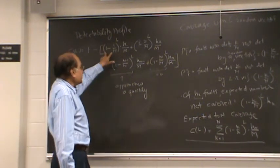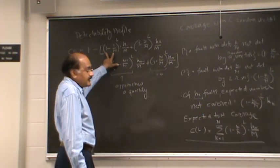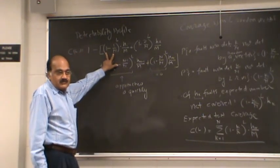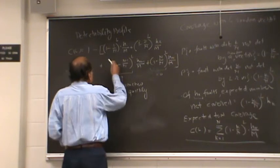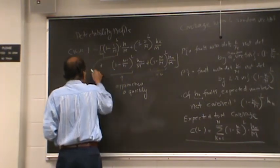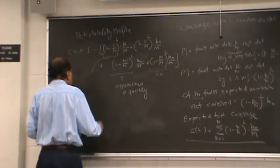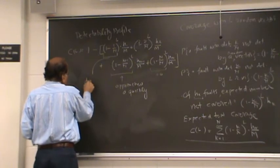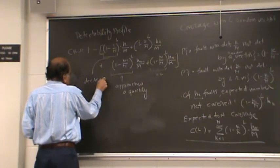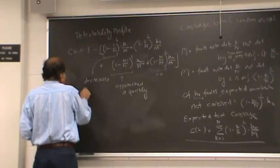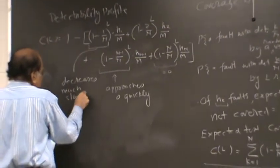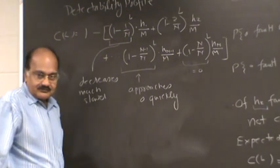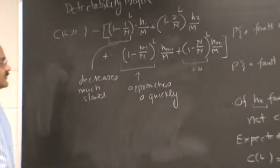Now on the other hand, this term here, it is just a little less than 1. So this term will decrease slowly. So this term, notice that it decreases slowly. Decreases much slower. So what's the observation here?